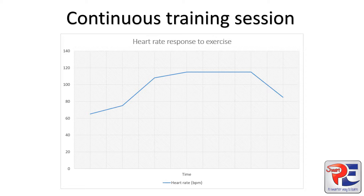Let me break down the graph very quickly for you. On the y-axis, the one that goes from top to bottom, that is heart rate measured in beats per minute. And on the x-axis, which goes from left to right along the bottom, that is time.